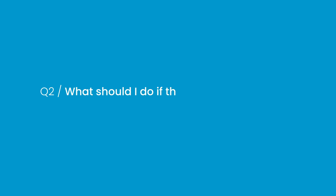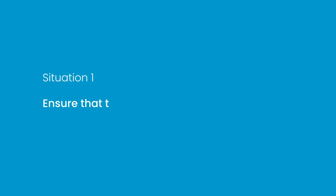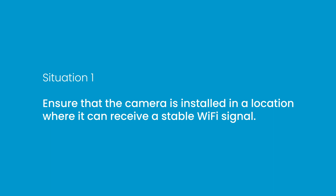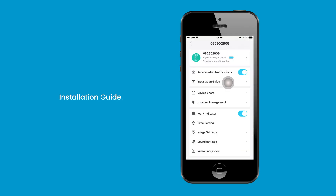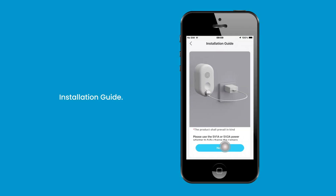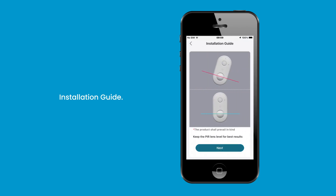Question 2: What should I do if the camera drops offline during use due to network issues? Situation 1: Ensure that the camera is installed in a location where it can receive a stable Wi-Fi signal, preferably at 75% or higher signal strength. You can use the installation guide in the app to test the signal.